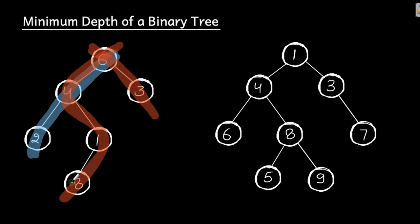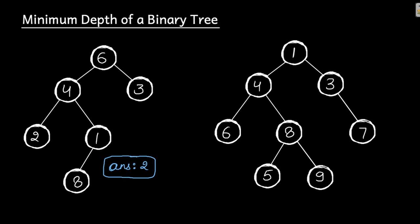We have multiple paths because there are three leaf nodes, so there will be three paths. Whichever is the minimum path, that is going to be my minimum depth. So the minimum path here — the answer for this particular test case — is going to be two.